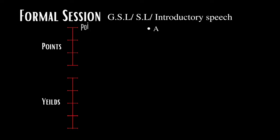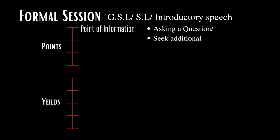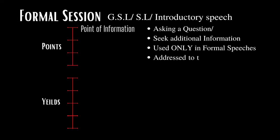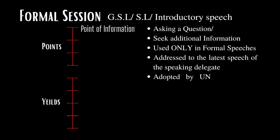There are five points generally accepted by Model UN conferences. Point of Information is raised to seek additional information on another delegate's speech or ask a question. It can only be raised after the recognized delegate completes their speech, and the question should relate to that speech, though past speeches can be referred to. This point is adopted by UNA-USA and Time and Procedure, generally restricted to formal debate areas such as GSLs, Speakers Lists, and draft resolution discussion speeches.